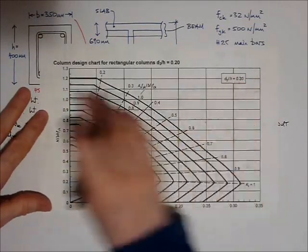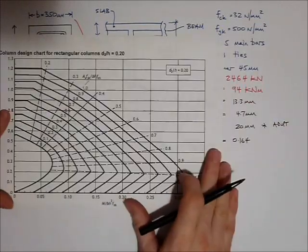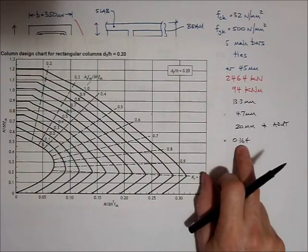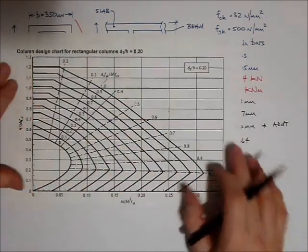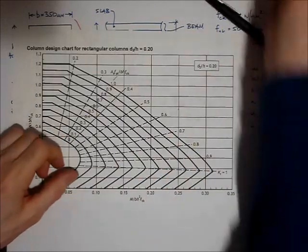I could consider the design chart for 0.15 and then for 0.2 and interpolate but I'm not going to do that. Right. Let's have a look.